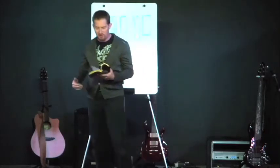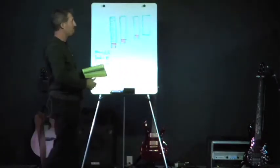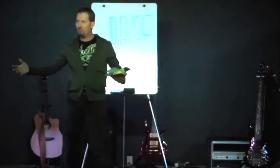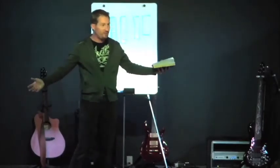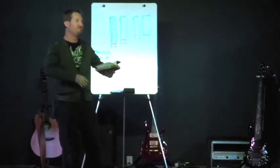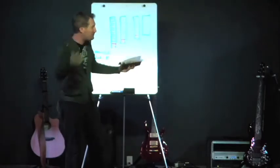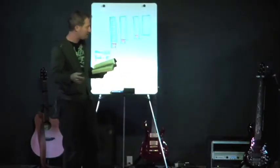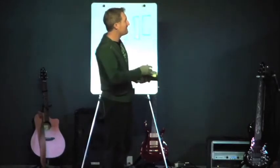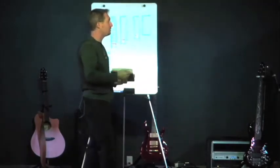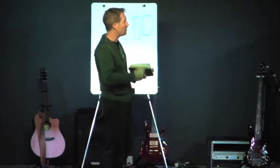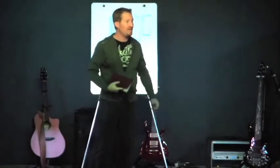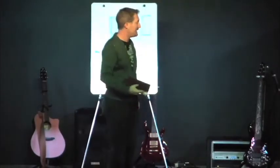Deuteronomy 14:22 says: be sure to set aside a tenth of all that your fields produce every year — that means everything you make, all of your income. And Leviticus 27:30 says: the tithe of everything from the land, whether grain from the soil or fruit from the trees, belongs to the Lord — it is holy to the Lord. The 10% we're supposed to set apart is supposed to go directly to God.